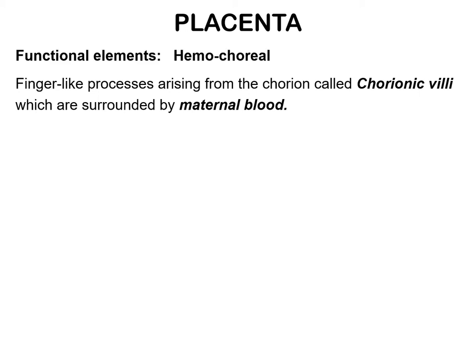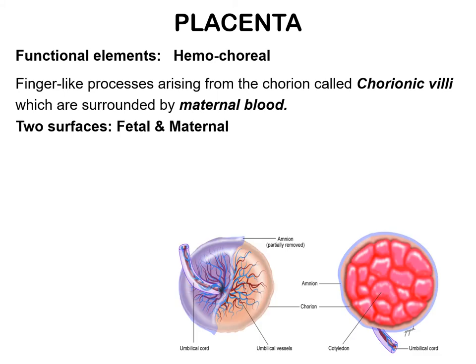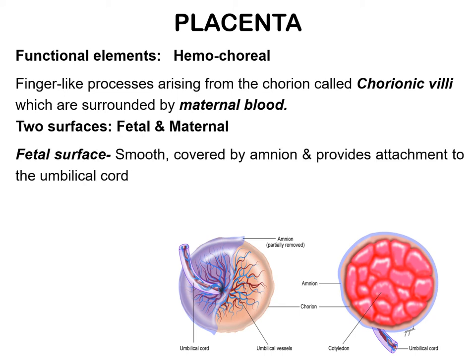The placenta on gross examination displays two surfaces: fetal and maternal. The fetal surface is shiny, grey, and smooth. It is covered by amnion, giving a translucent appearance such that radiating umbilical vessels can be seen under the amnion. It also provides attachment to the umbilical cord.